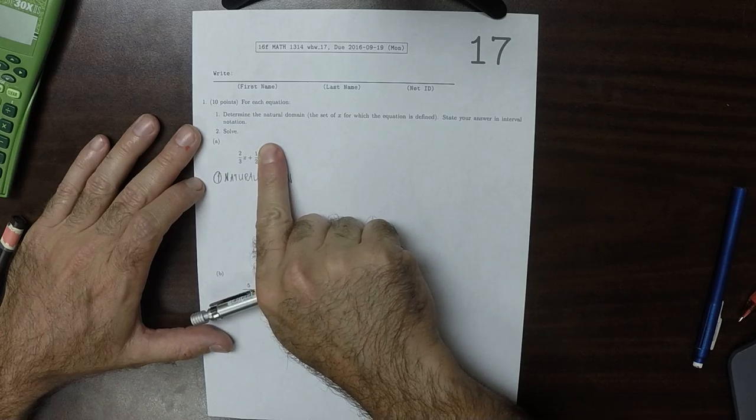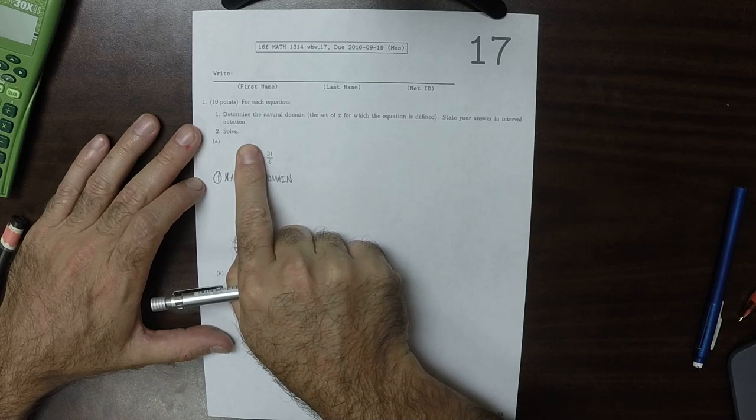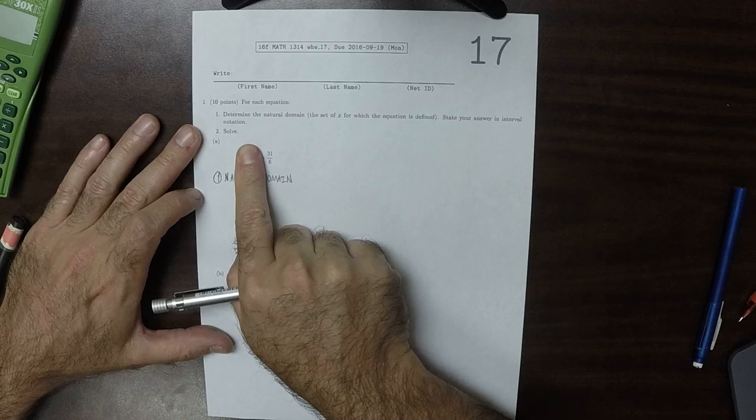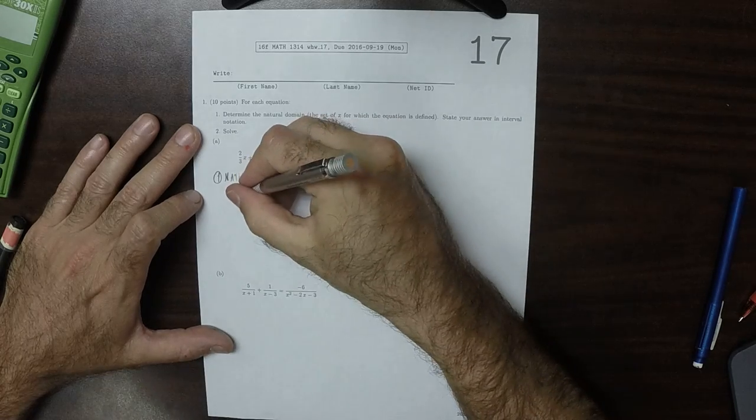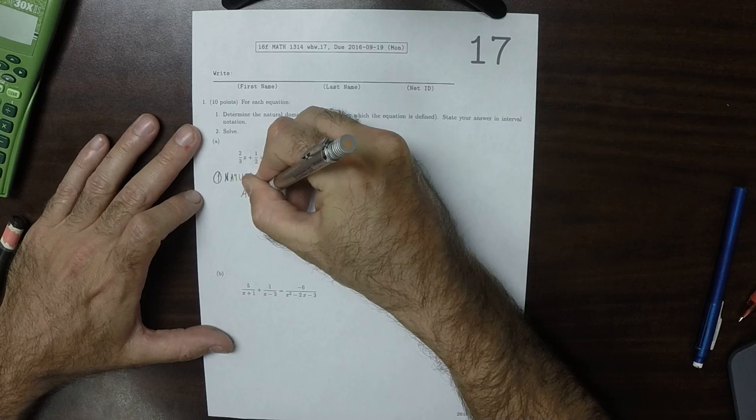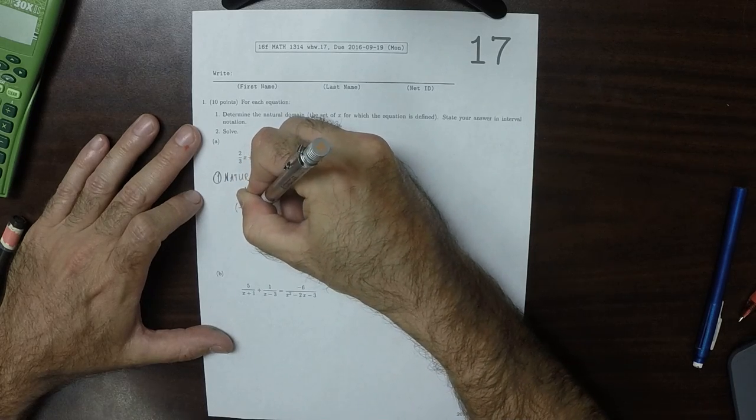You could plug in 10. That'd be fine. The right-hand side is a constant, so it doesn't even depend on x. So you can plug in any x at all. So that means that the natural domain is all x. There's no restriction. Written in interval notation, this is negative infinity to infinity.